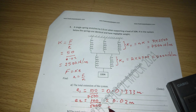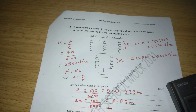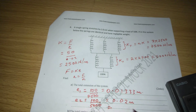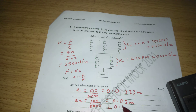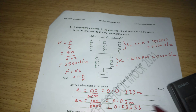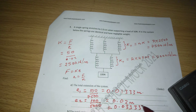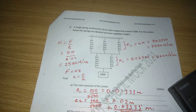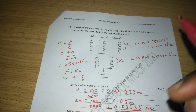The total extension is 0.02 plus 0.0133, which equals 0.033 meters. This is the total extension, calculated by finding the extension for each part of the combination and then adding them together.